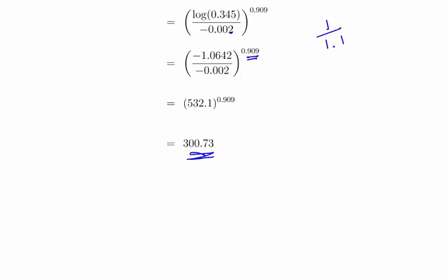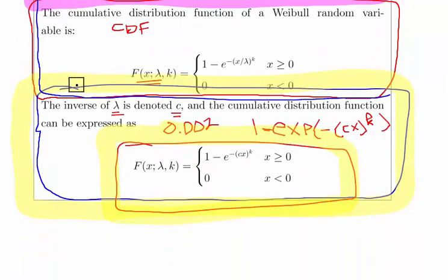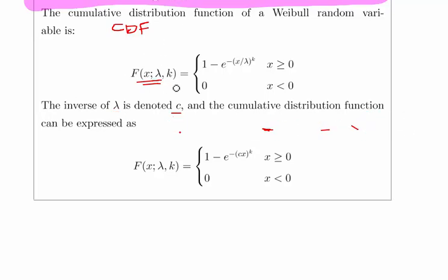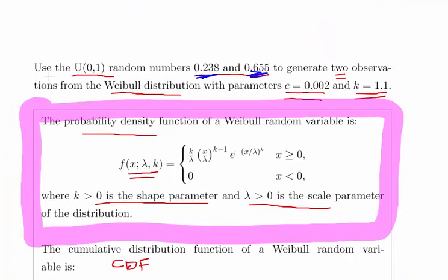Key things there are really just knowing the cumulative distribution function. The cumulative distribution function is the key part of this, using that essentially. And just being able to reparameterize it or restate it in a form that you're comfortable with. For example, the issue here was denoting the inverse of lambda as c. It was intentionally left a little bit vague.